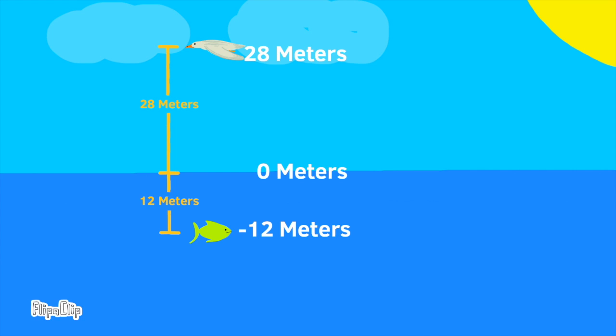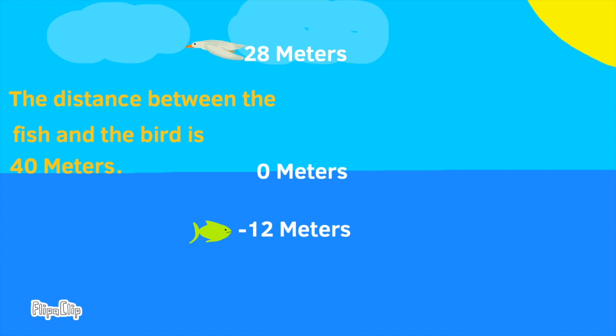So what's the distance between the fish and the bird? To find the distance between the fish and the bird, we would add the absolute values of their elevations: 28 and 12. 28 plus 12 equals 40. The total distance between the fish's elevation and the bird's elevation is 40 meters.